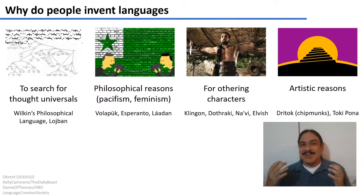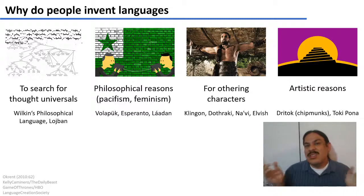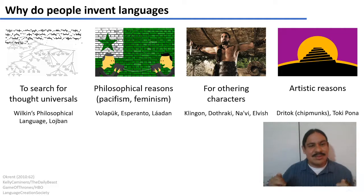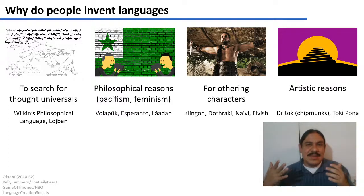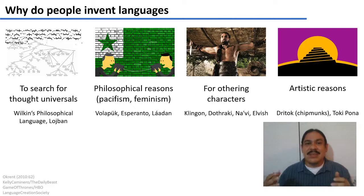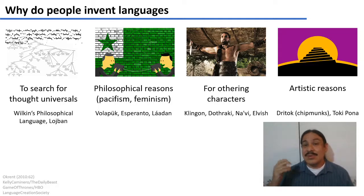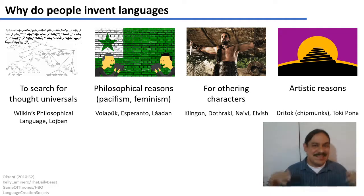There are many reasons why people make artificial or constructed languages. One is to search for thought universals — to try to make languages work like math functions or like a strict catalog of categories of the world. People also make languages for philosophical reasons. For example, Esperanto was designed because its maker Ludwig Zamenhof hoped it would promote pacifism. The language Ladan was designed by Suzette Elgin to promote second-wave feminism. Languages are also made to other characters in fiction or literature, which is how Klingon from Star Trek came about, also Dothraki from Game of Thrones, Na'vi from Avatar, and Elvish from Lord of the Rings. There are also languages made for artistic reasons, because someone likes something about language and wants to see how far they can take it. The language Treetop, for example, is made for chipmunks — someone thought it would be cool to figure out what a chipmunk language would look like.